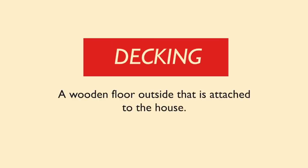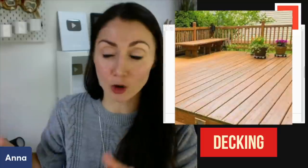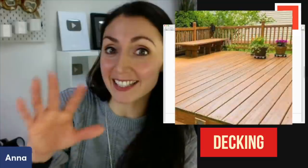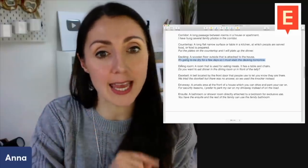Next, we have the word decking — the wooden area, the long planks of wood laid to make a floor space, usually out the back of a house. In the back garden, attached to the house, you might have decking. In Australia or America this would be referred to as the deck, and we can use that word here too, but often we say decking — a slight British difference. You paint the decking, you might need to replace it, you often have furniture or plant pots on it. Example sentence: it's going to be dry for a few days, so I must stain the decking tomorrow.